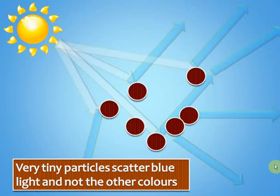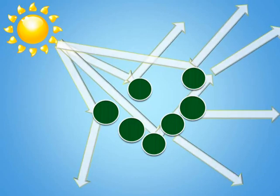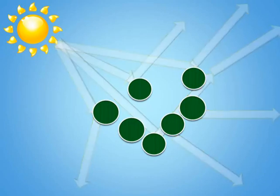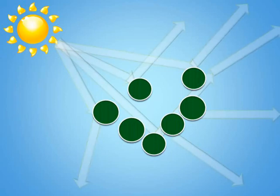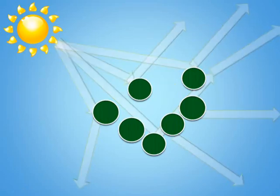If the particles are larger, the entire white light gets scattered. Violet light and blue light get scattered the most, and red light in general gets scattered the least. If the particles are really large, only then does red light get scattered. But if the particles are very tiny, then only blue light gets scattered. When particles are large, all colors of light get scattered and red light is the most difficult to scatter — the particles have to be really, really large to scatter red light also.